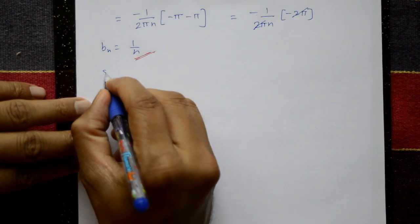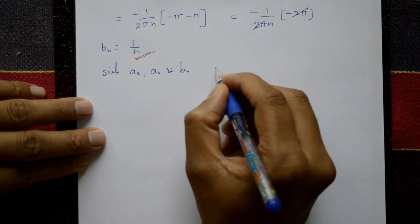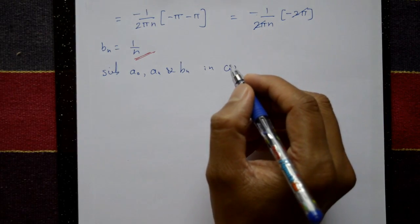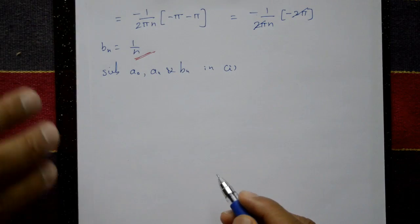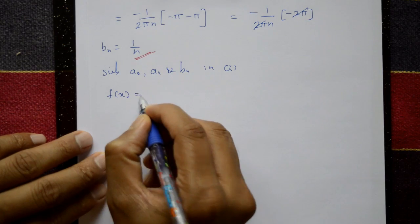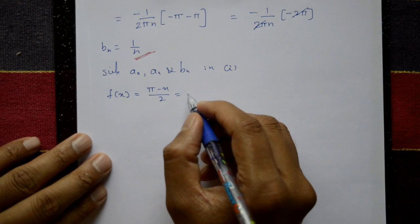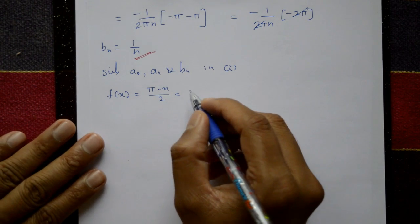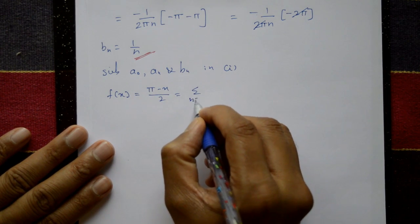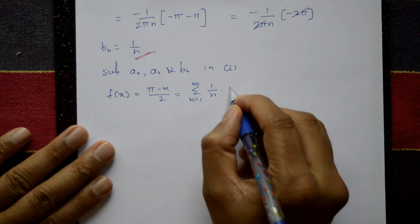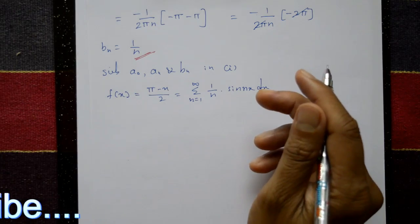Now substitute a₀, aₙ, and bₙ into equation 1. Since a₀ = 0 and aₙ = 0, only the bₙ terms remain. The Fourier series is: (π - x)/2 = Σ(n=1 to ∞) (1/n)sin(nx).